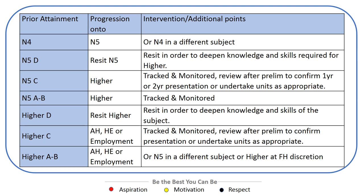For the benefit of pupils' welfare and education, it is important that pupils are presented for courses at the most appropriate level for them at each stage. There is ongoing tracking and monitoring of their progress throughout the session. Making sure that pupils are placed at the correct level as soon as possible is essential, as this allows the focus of learning and teaching to be on gaining that award, maximising pupils' chances of success, building their confidence, and enabling them to progress. The table shows the prior attainment required for pupils to progress to the next stage of their pathway, where HE stands for Higher Education.